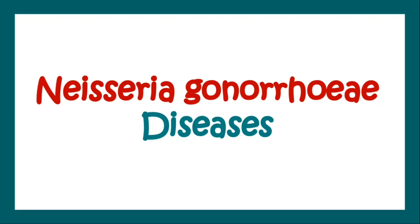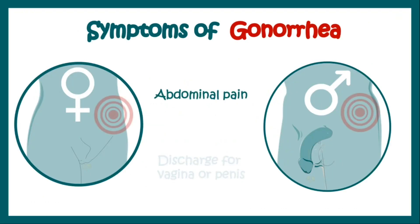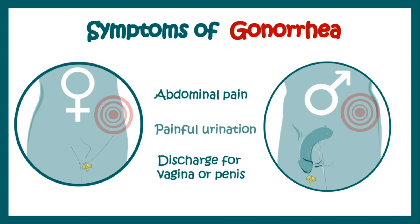The disease caused by Neisseria gonorrhoeae is known as gonorrhea. The common symptoms include abdominal pain, discharge from the vagina or penis, and painful urination.